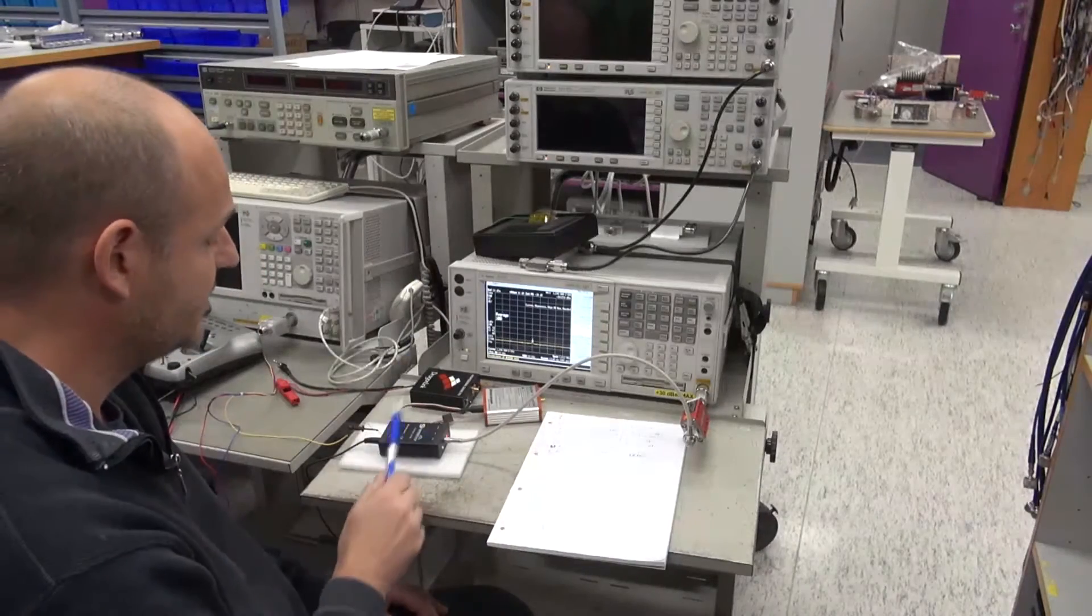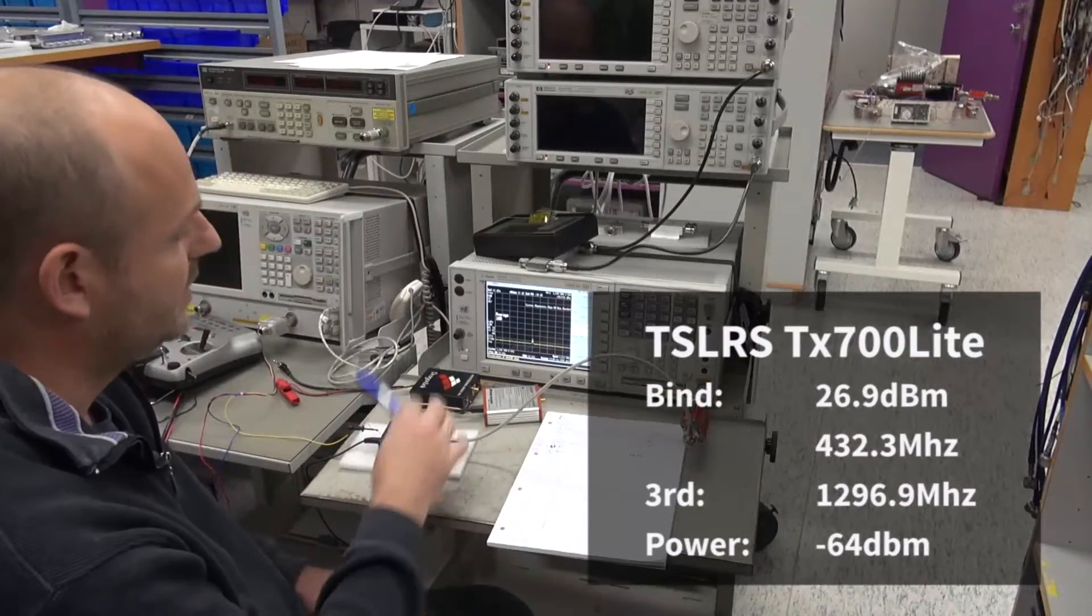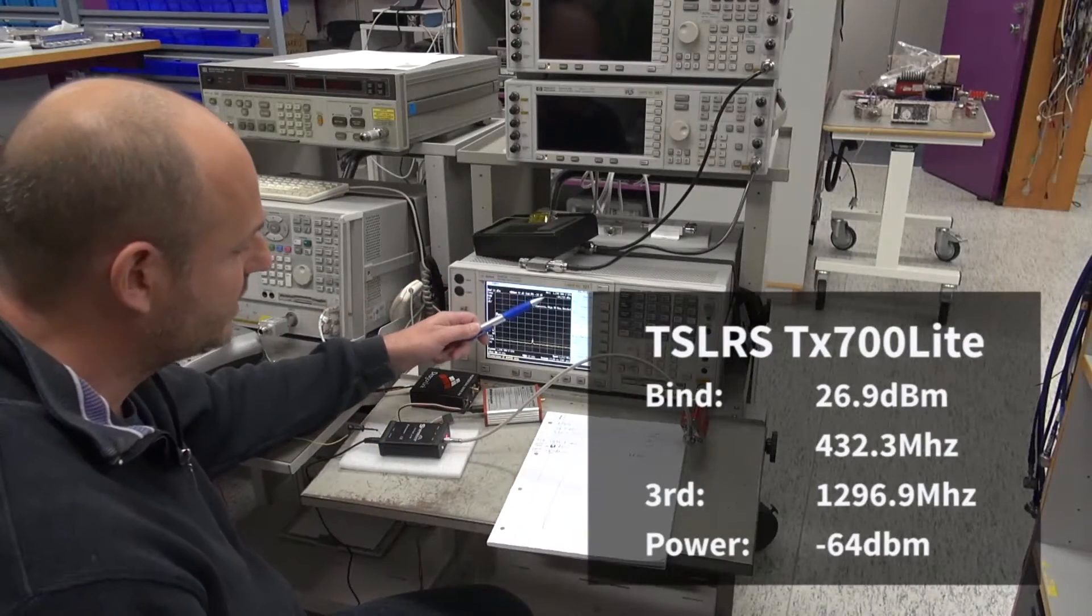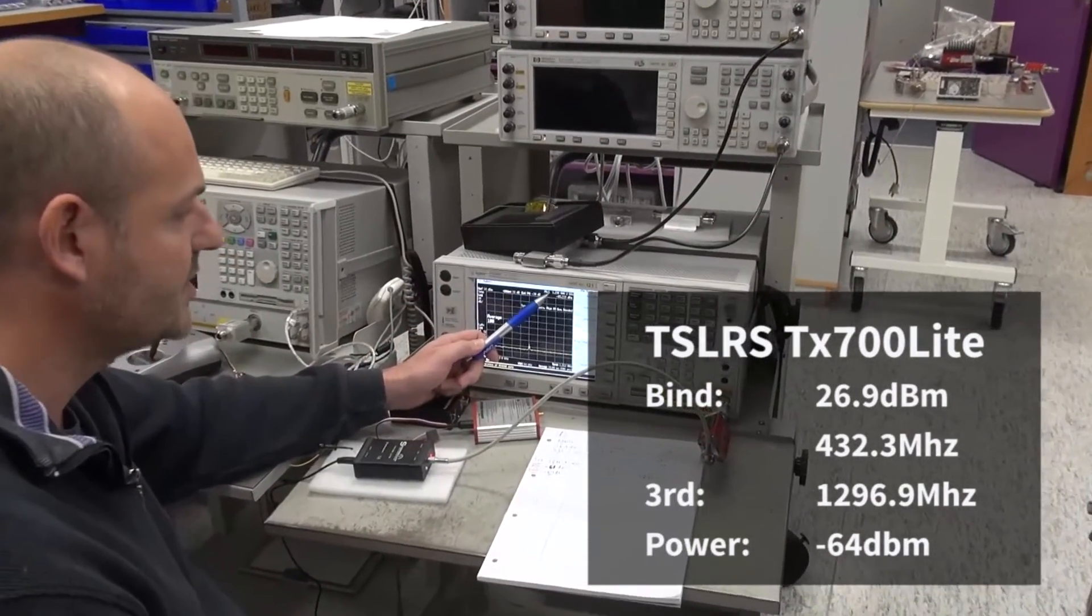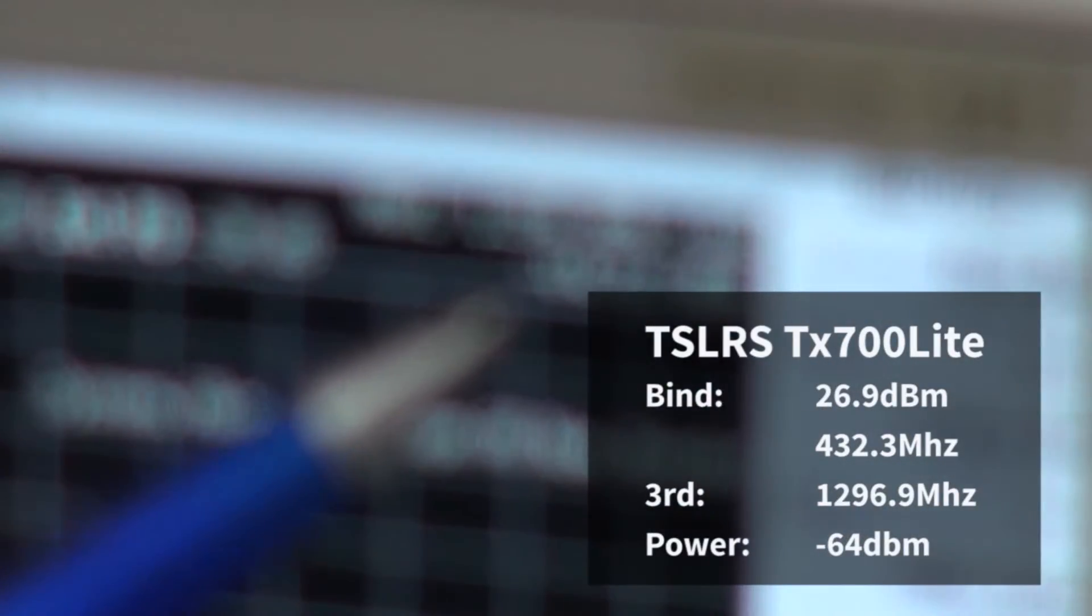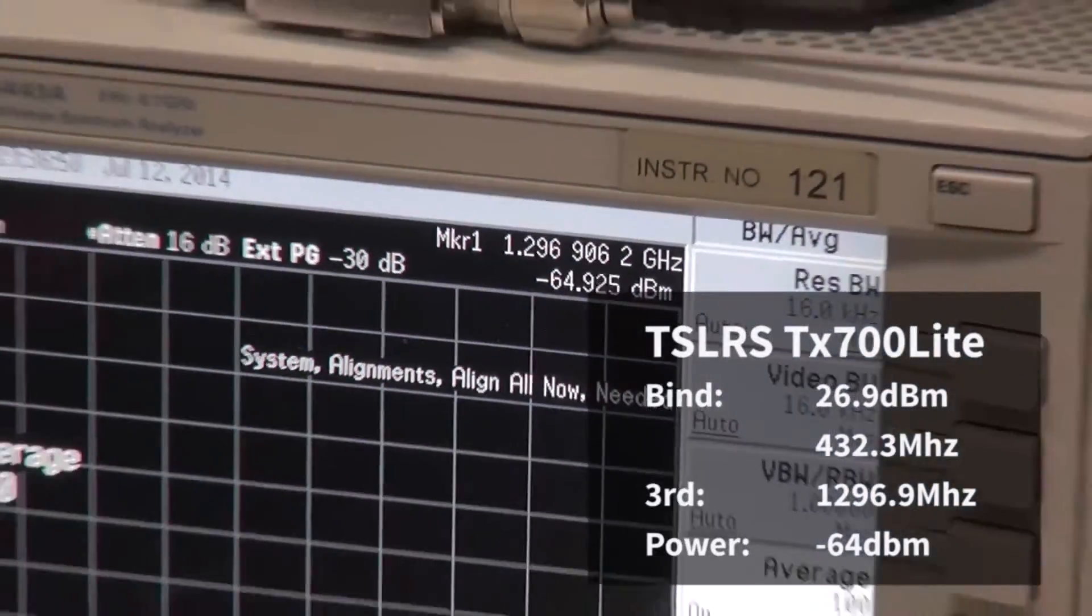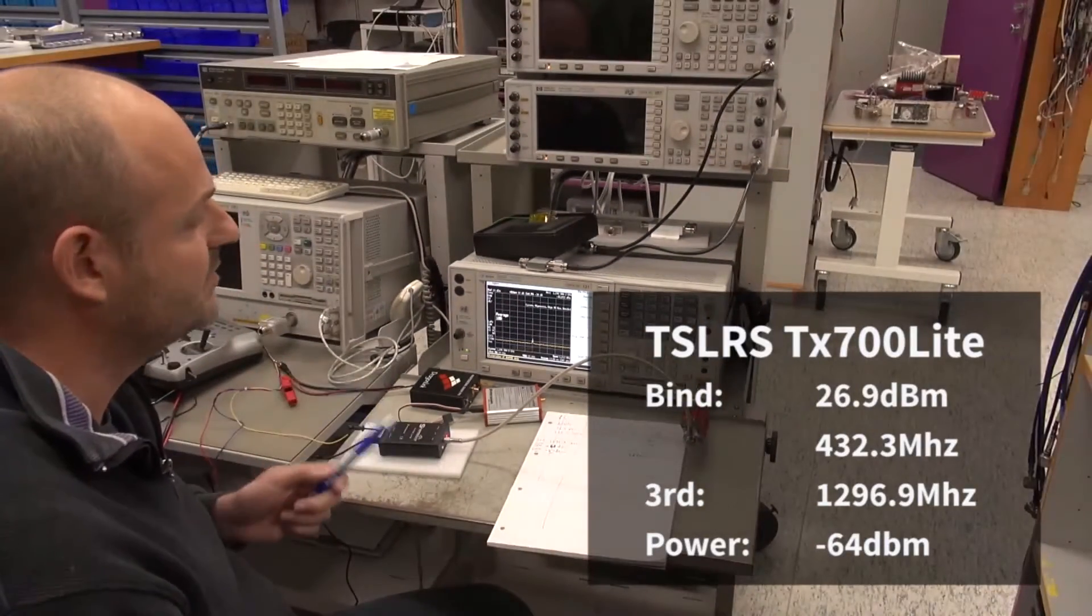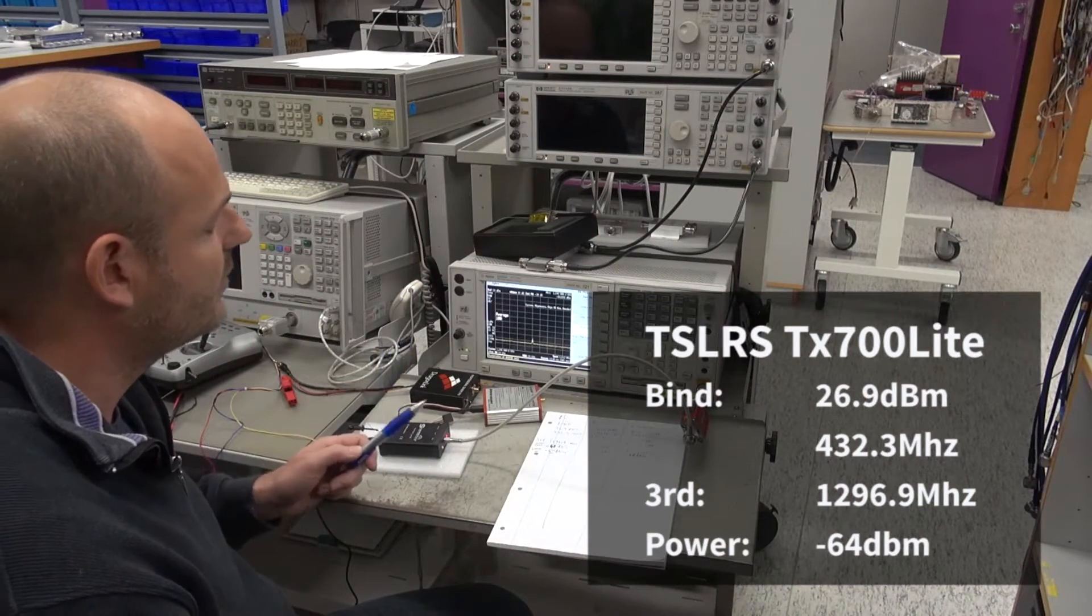First we're going to test the Shara UHF system. I already sent it into BIND and zoomed in on the third harmonics. What you can see right now is the harmonic level on the third, the 1296 megahertz, is minus 64-65 dBm. This is a very weak signal. The fundamental frequency is half a watt, plus 27 dBm at the same time. So this is a huge attenuation of the third harmonic.